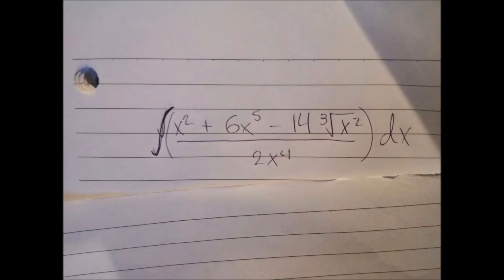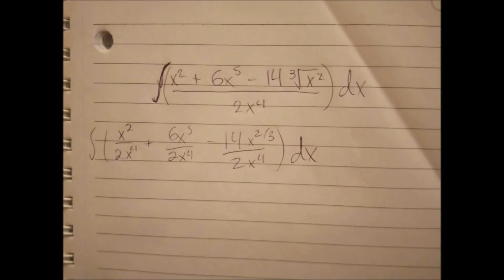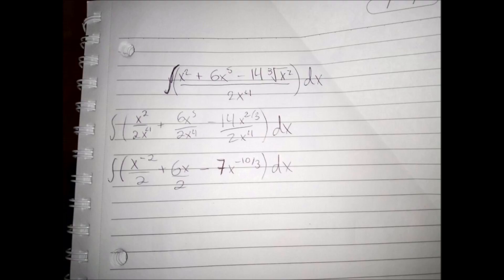We divide the equation into fractions, and then we can use the rule of dividing exponents that we saw in class. We subtract both exponents in each fraction, leaving us with one variable x per fraction.